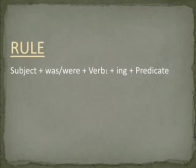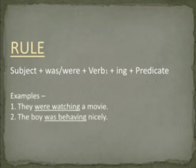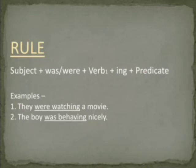We use 'was' with I, he, she, it, and singulars. We use 'were' with you, we, they, and plurals. Let us see some examples. First: They were watching a movie. 'They' is the subject. We have used 'were' here because the subject is plural. 'Watch' is the first form of the verb, with -ing added. 'A movie' is the predicate.